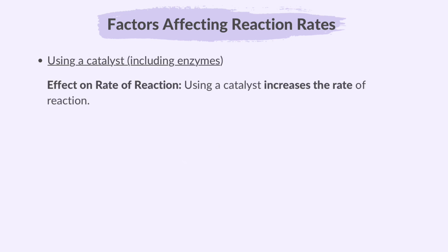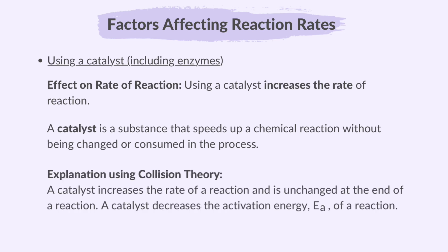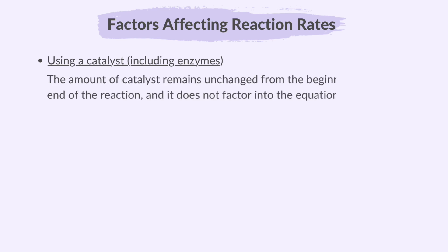Using a catalyst increases the rate of reaction. A catalyst is a substance that speeds up a chemical reaction without being changed or consumed in the process. A catalyst increases the rate of reaction and is unchanged at the end of a reaction. A catalyst decreases the activation energy of a reaction. The amount of catalyst remains unchanged from the beginning to the end of the reaction and it does not factor into the equation.